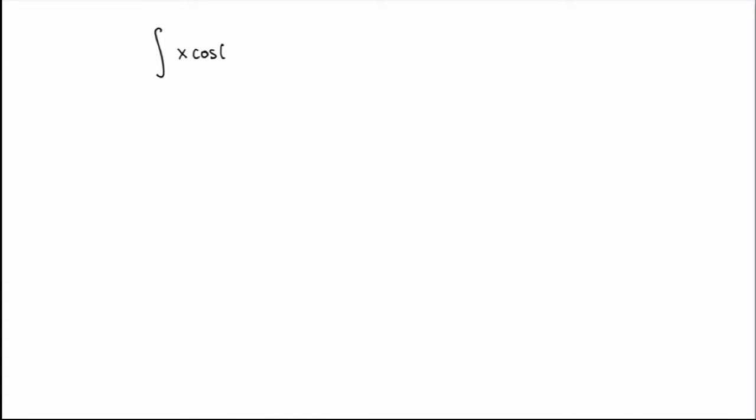Let's start with an example. Suppose that you want to integrate the function x times cosine of x squared. In other words, you're looking for a new function whose derivative will give you back x times cosine of x squared. That's not so obvious, but if you think about it for a little while, you'll probably come up with the answer, which in this case is one-half sine of x squared plus the arbitrary constant of integration.